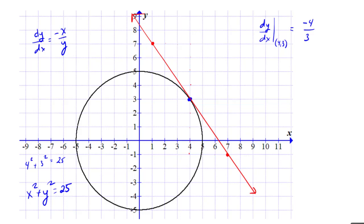If I wanted to know what it was exactly, we found that the slope was -4/3. I know we have a point (4,3), so y - 3 = -4/3(x - 4) from point-slope form.